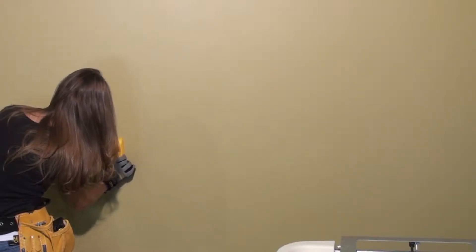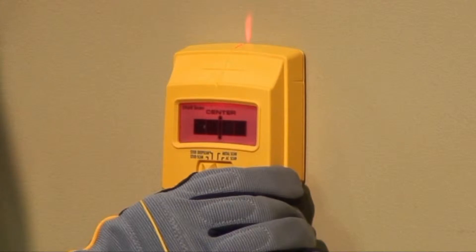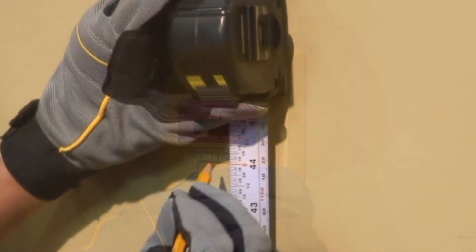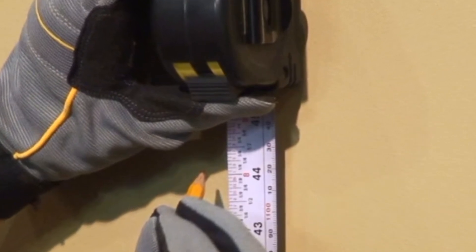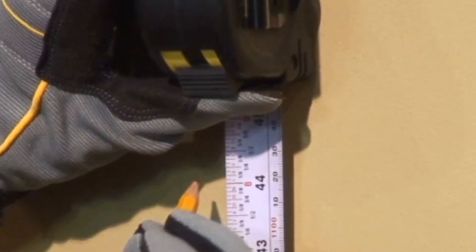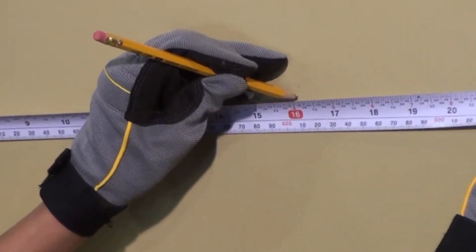Use a stud finder to locate the studs and mark the location with a pencil. To meet the ADA requirement, measure 44 and a quarter inches from the floor on stud center to what will be the top screw. Having located the studs, measure across 16 inches, the mounting distance horizontally between the screws.